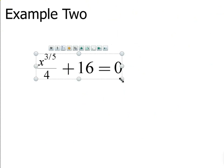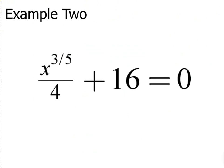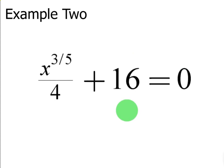Okay. So, this one has a fractional power. It's x to the three-fifths over 4 plus 16 equals 0. Yep. Good job. You want to subtract 16 from both sides, not multiply by 4. Remember, when you're solving an equation, you always add and subtract first. It's kind of the reverse of PEMDAS. So, you will subtract 16 from both sides. 0 minus 16 gives you negative 16.